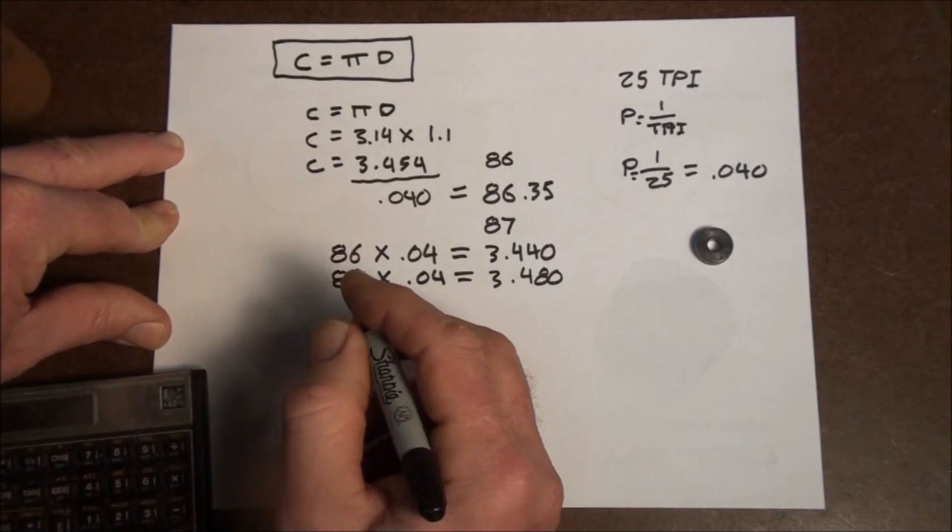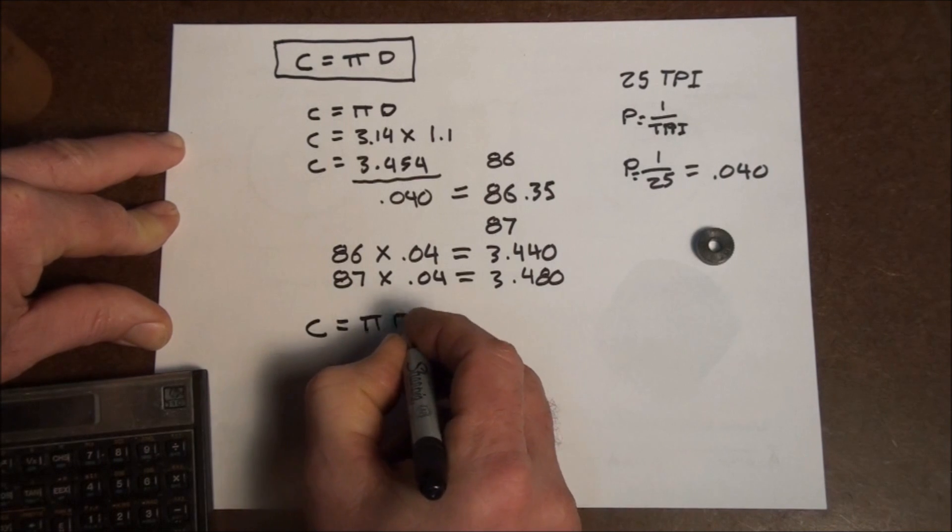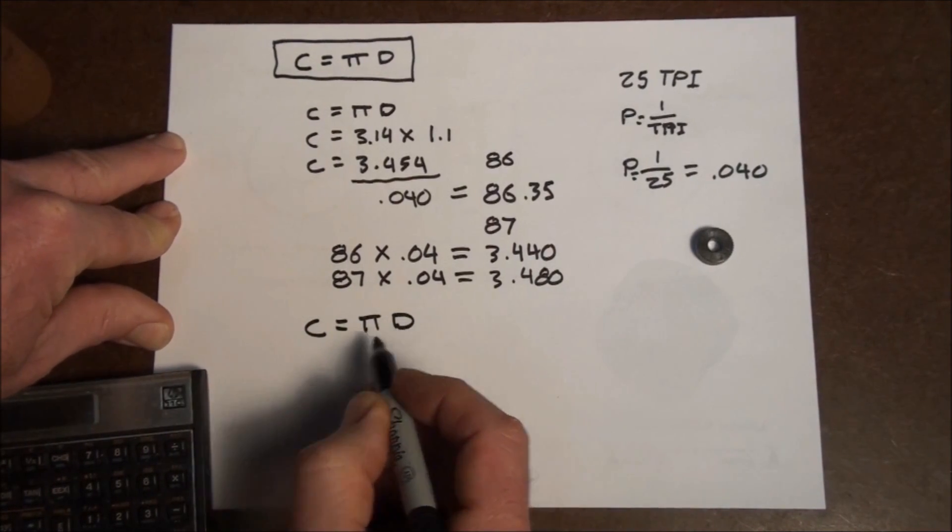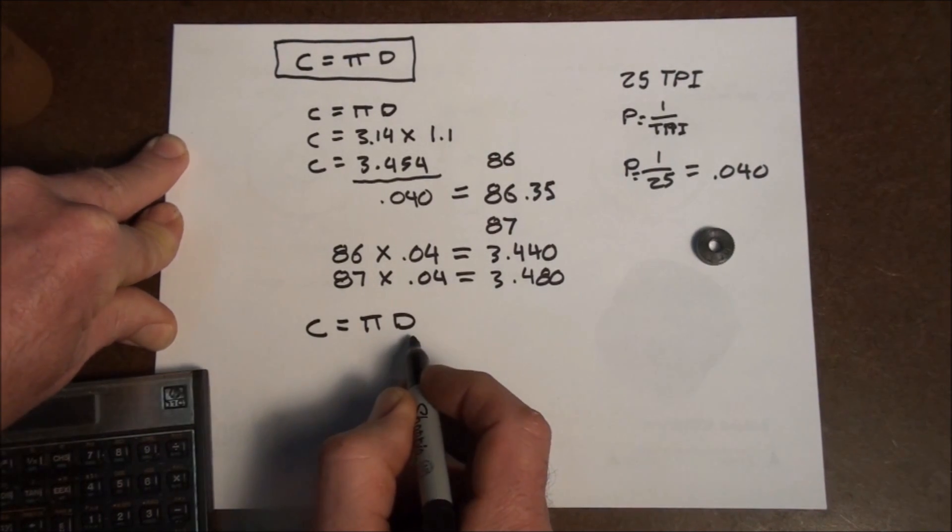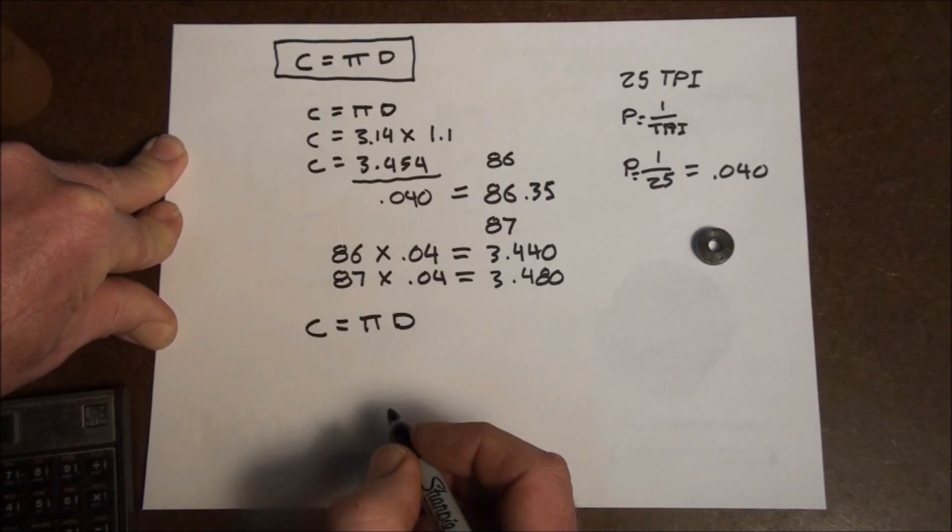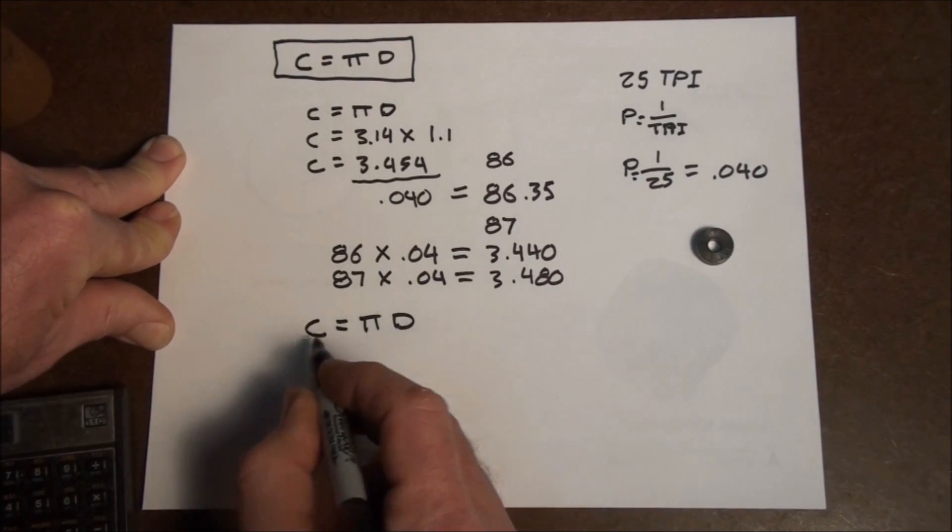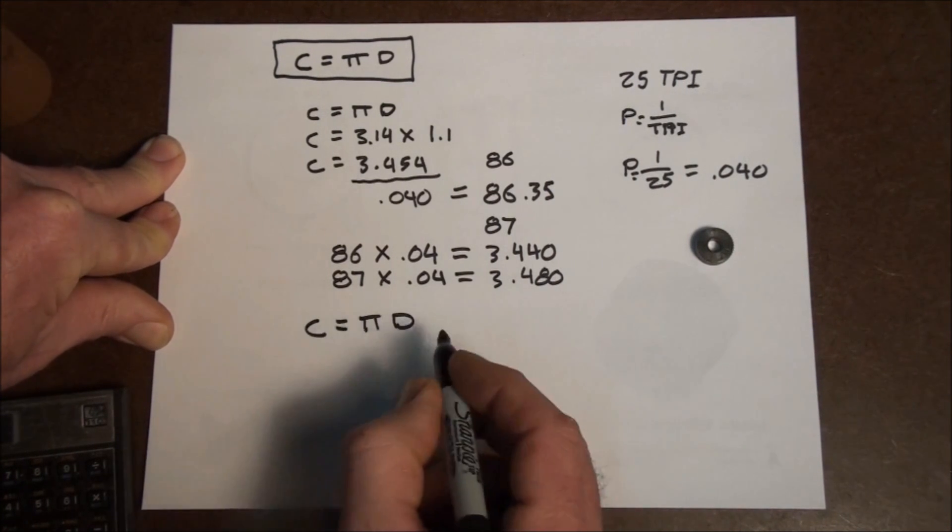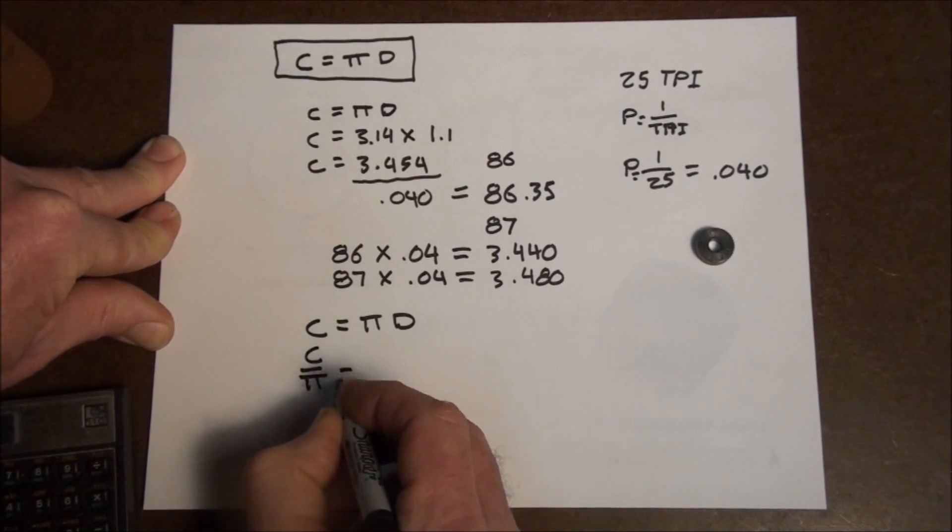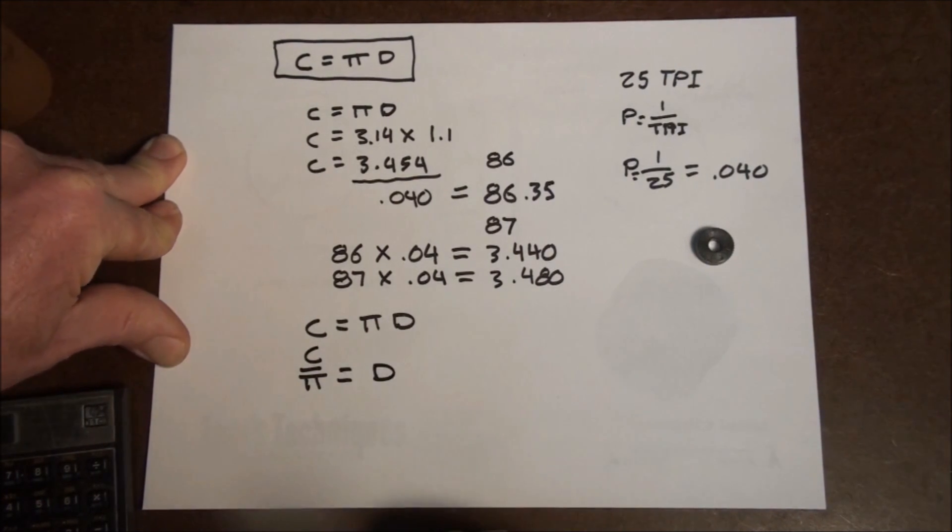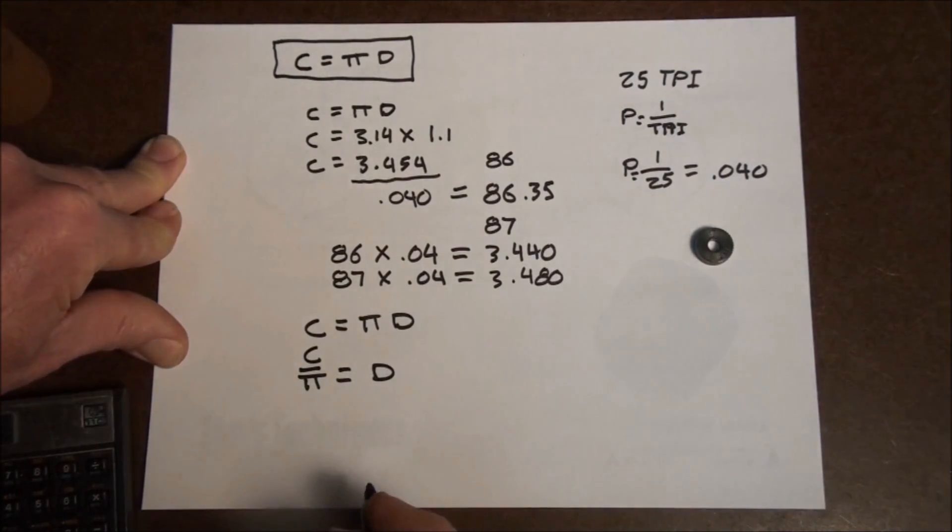C equals pi D. We want to solve for D. We have C, right? Here's our circumference. We have C and we have pi. So we need to solve for D. So let's rearrange this formula here a little bit. Let's isolate D on this formula. So we have to divide each side by pi. So C over pi equals D. D equals C over pi. Here's our diameter. We have C. We have the two C's in this case. And we have pi. So let's figure out what that is.